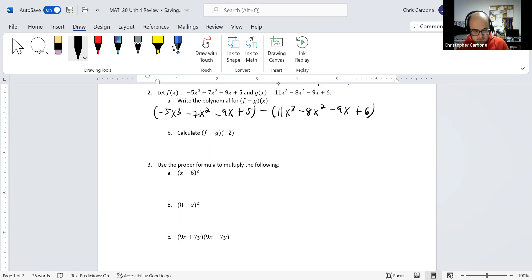Negative 5x cubed minus 11x cubed, that would be negative 16x cubed. Negative 7x squared minus negative 8x squared, so we'll be adding those, which is plus x squared.